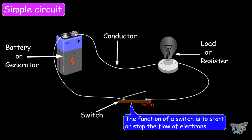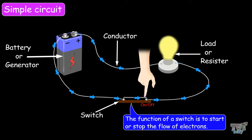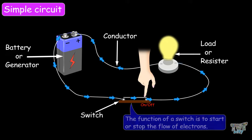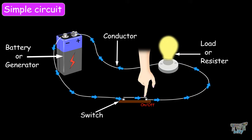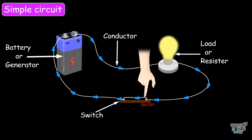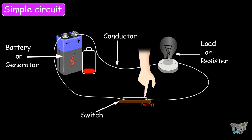The function of a switch is to start or stop the flow of electrons. When the switch is closed or on, the circuit is complete and the current starts flowing through the closed circuit. Thus, a closed circuit is a circuit with no gaps in it. The circuit connected to a dead battery may not perform any work, but is still considered as a closed circuit.